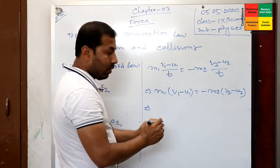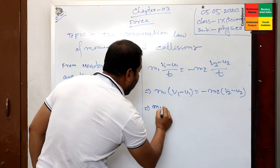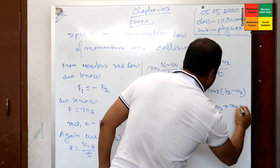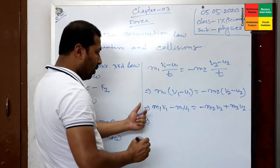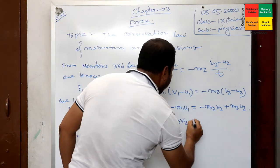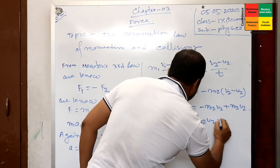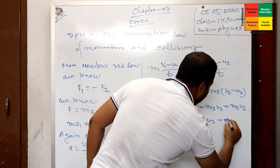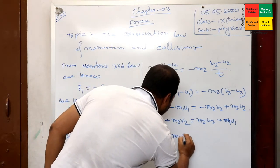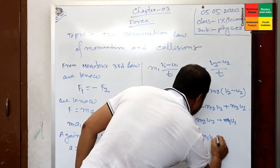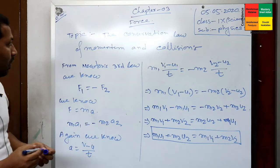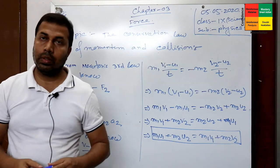Now, multiplying out both terms: m1·v1 minus m1·u1 equals minus m2·v2 plus m2·u2. Rearranging both sides: m1·v1 plus m2·v2 equals m2·u2 plus m1·u1. So we can write: m1·u1 plus m2·u2 equals m1·v1 plus m2·v2. This is the mathematical derivation of the law of conservation of momentum and collision. Thank you.